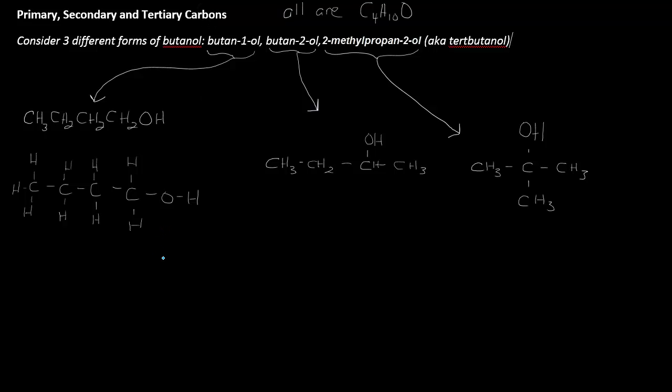So now what we want to address is really just some bookkeeping type nomenclature here. The carbon with the arrow here is known as a primary carbon. It often gets abbreviated with a 1 and a little degree symbol. A primary carbon is attached to a functional group and then to one other carbon atom.